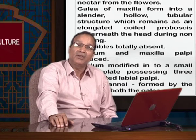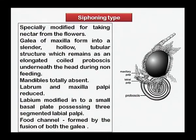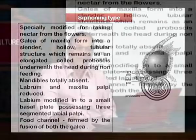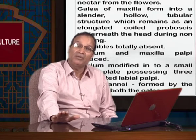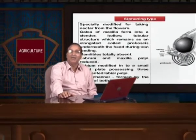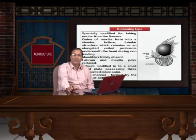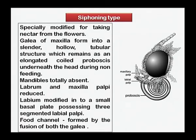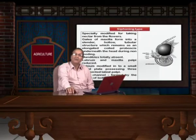The siphoning type of mouthpart modification is seen in butterflies. Here all parts except the maxilla are reduced, and out of the maxilla, the galea is modified into a coil-type structure like a watch spring. Suction is created with the help of a suctorial pump or pharyngeal pump present in the neck region.